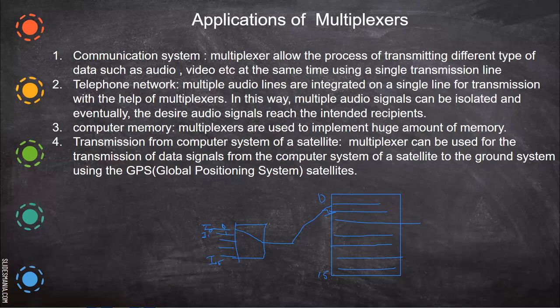Multiplexers can also be used for the transmission of data signals from the computer system of a satellite to the ground system. The data comes as a single line but it is distributed to different computers on the ground. So multiplexers are used in GPS and satellite-to-ground data transmission systems.